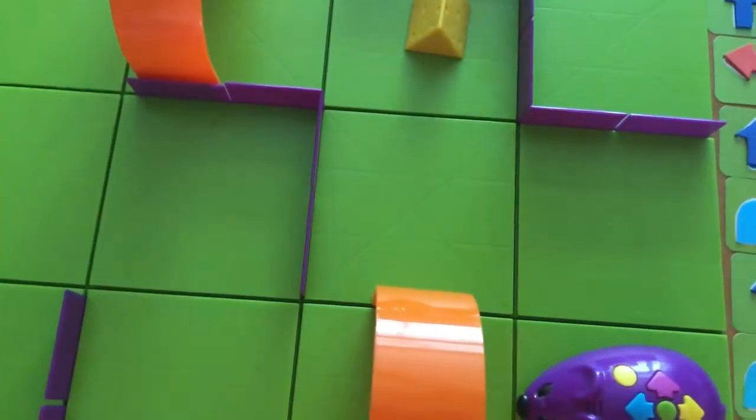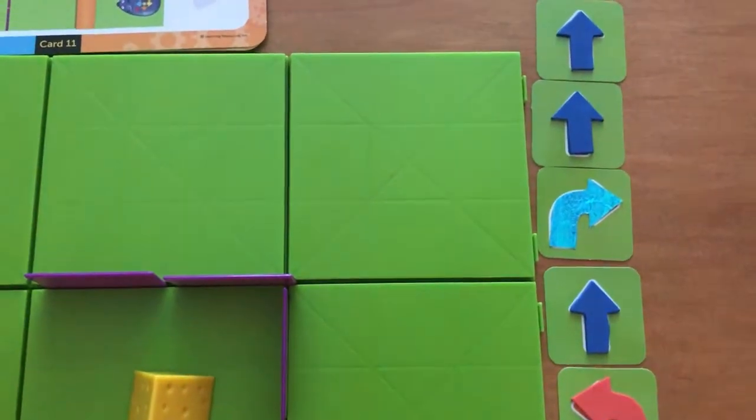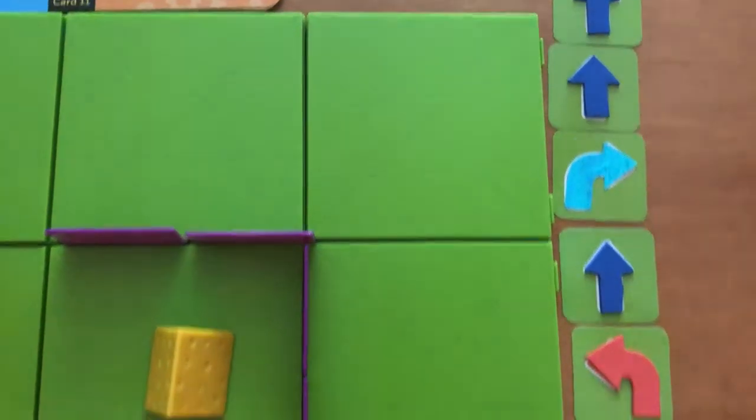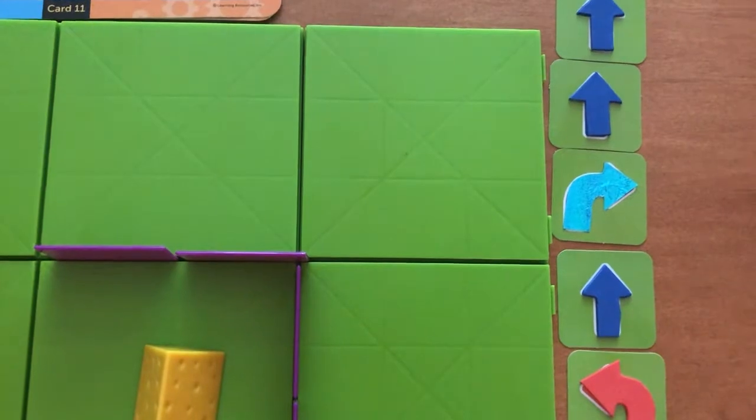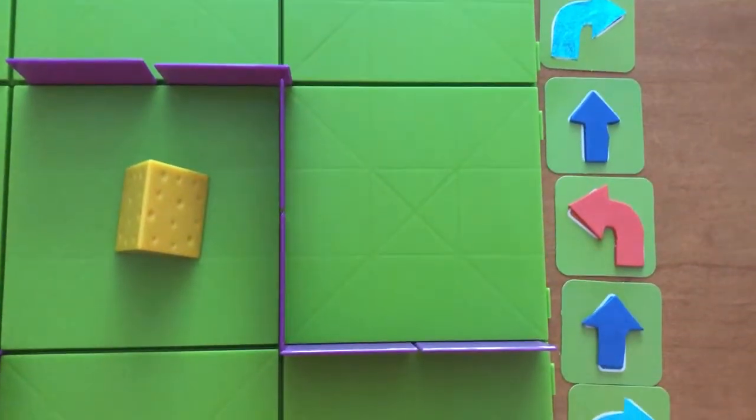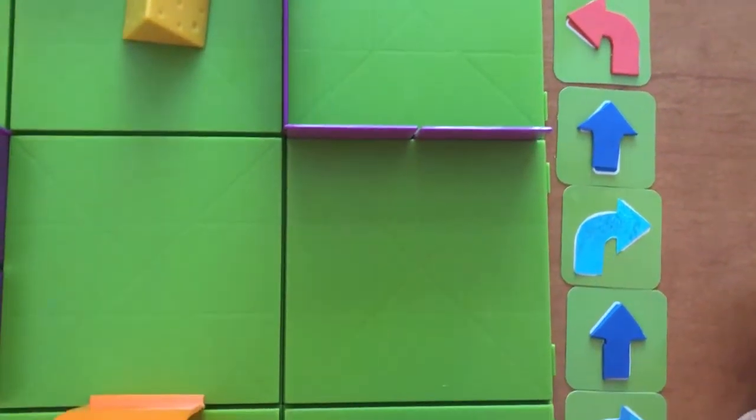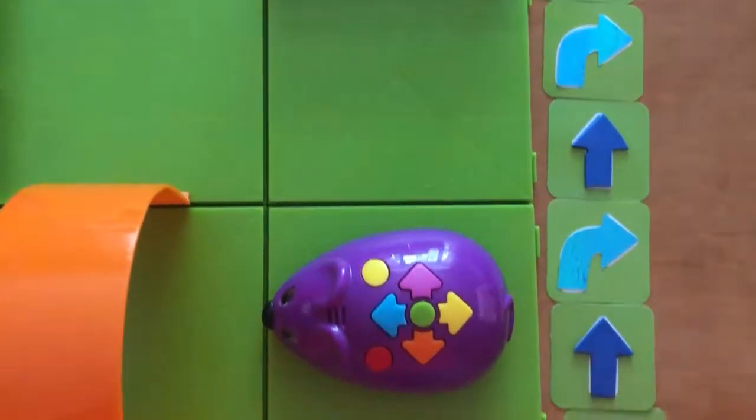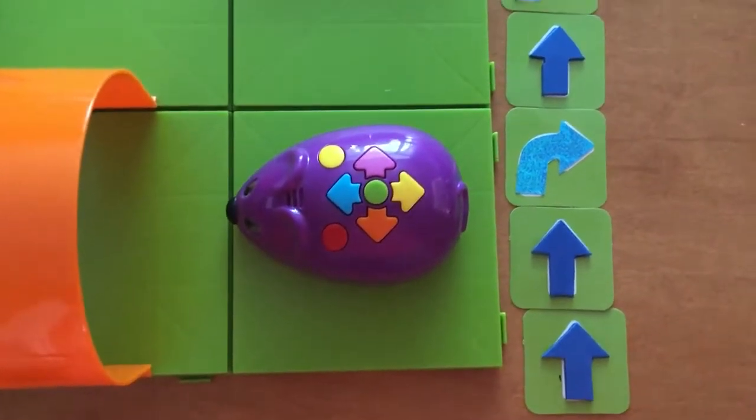I have gone ahead and used my arrow keys to indicate where the mouse is going to go. So he's going to go forward 1, forward 2, turn right, forward again, turn left, forward again, turn right, forward, turn right, forward, another forward. And then he finds the cheese.